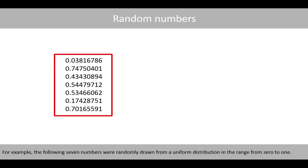For example, the following seven numbers were randomly drawn from a uniform distribution in the range from 0 to 1.